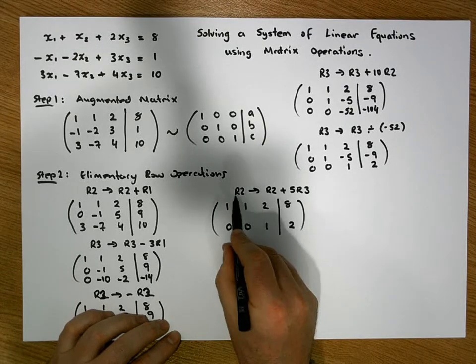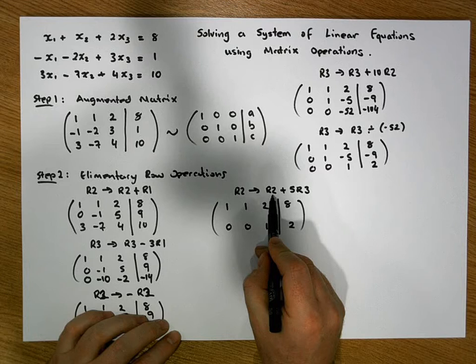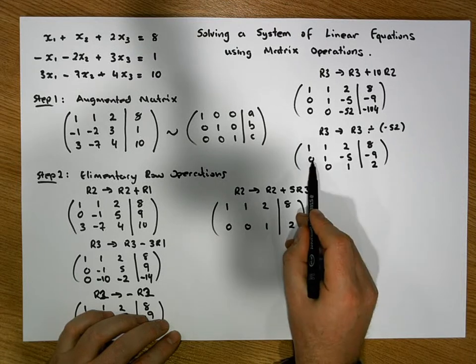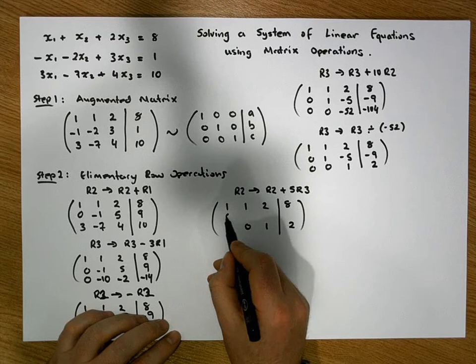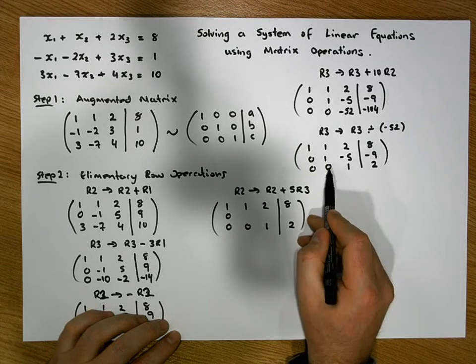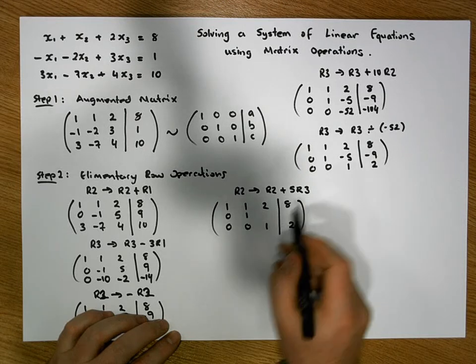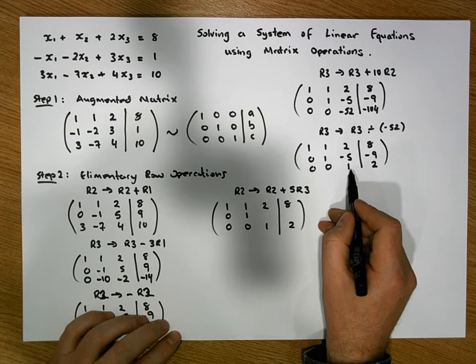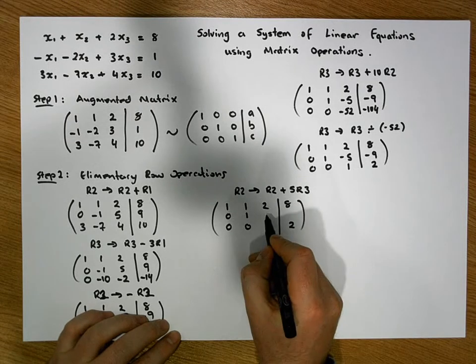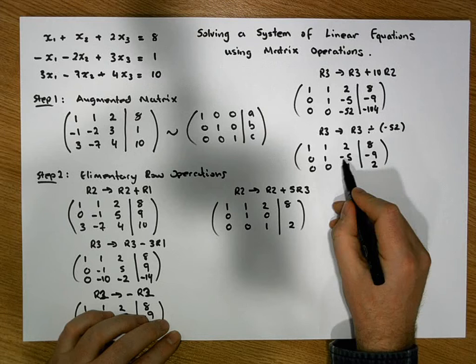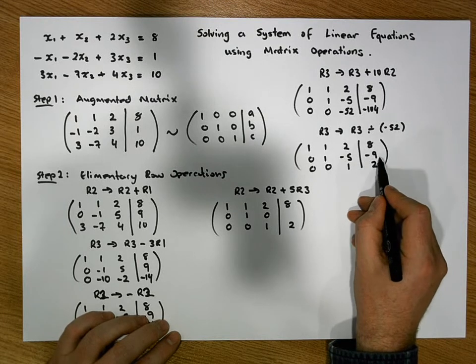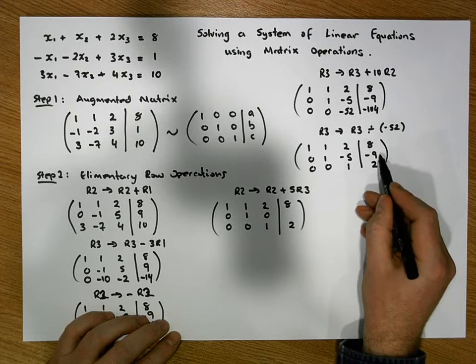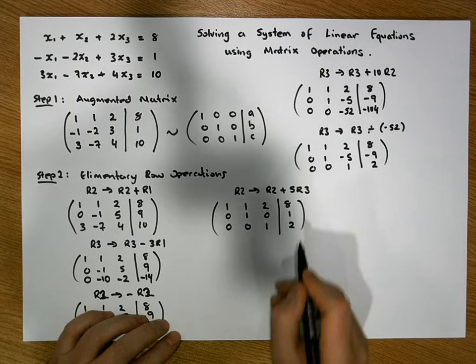To update row 2 is the old value in row 2 plus 5 times row 3. So the first entry is 0 plus 5 times 0 is 0, the next entry is 1 plus 5 times 0 is 1, the next entry is minus 5 plus 5 times 1 is minus 5 plus 5 gives us a 0. And the next entry is minus 9, minus 9 plus 5 times 2 is minus 9 plus 10 gives us a value of 1.